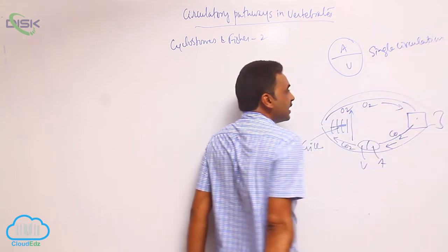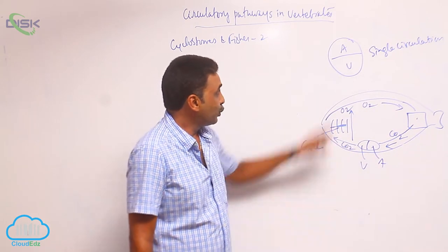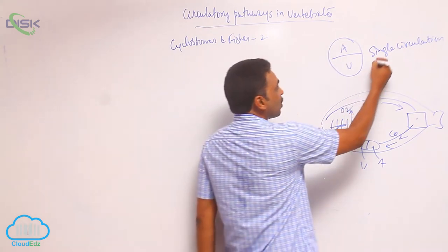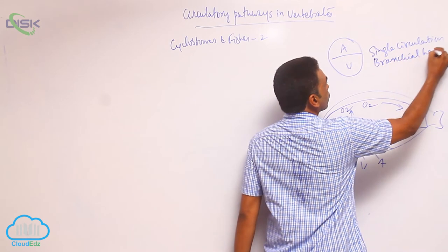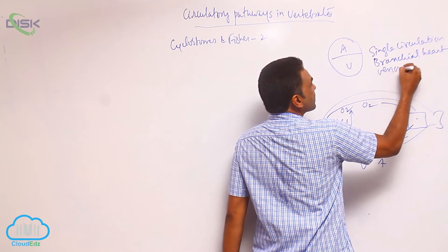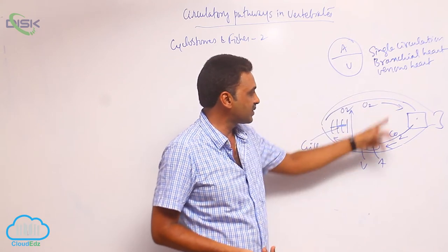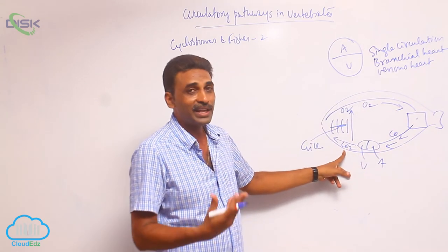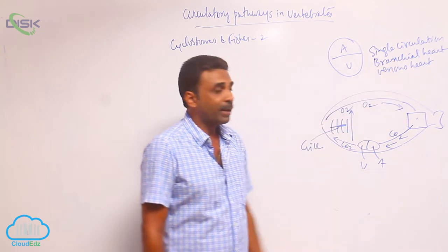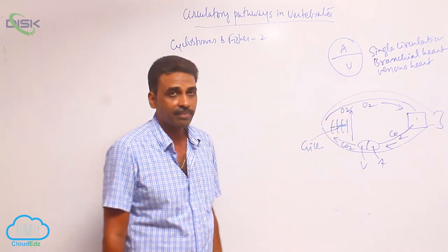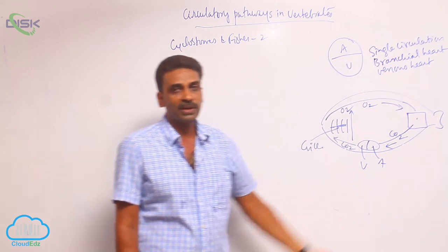It is called single circulation - one circuit, and blood passes through the heart once. The two chambered heart is called a branchial heart because it always pumps blood towards the gills. It is also called a venous heart because it is always pumping deoxygenated blood. After oxygenation at the gills, the blood is pumped to other parts of the body.